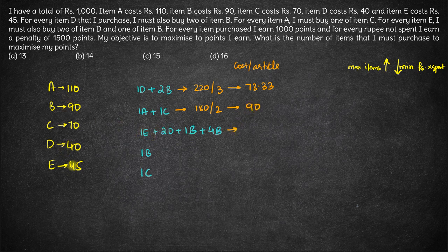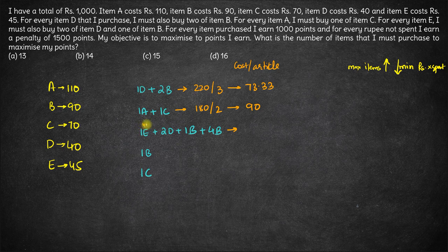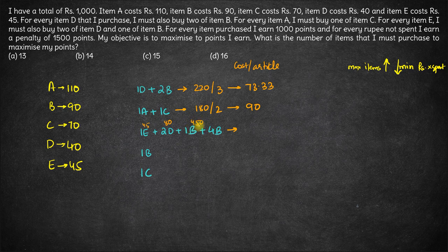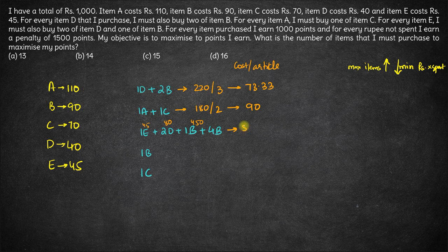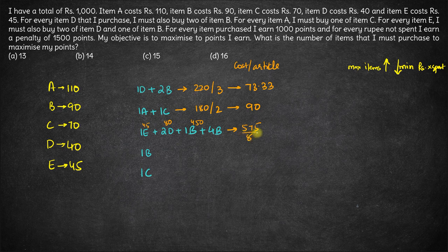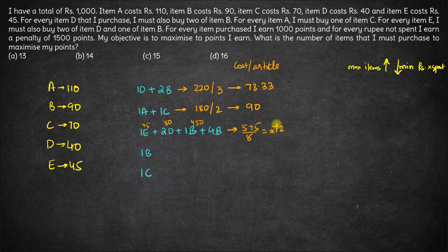Here you have one E which costs 45. Two D will cost 80 and five B will cost 450. So 450 plus 125 is 575 for how many articles? 5, 7, 8 articles. So this becomes 8 sevens are 56 approximately 72.